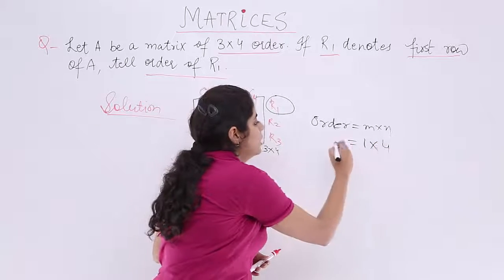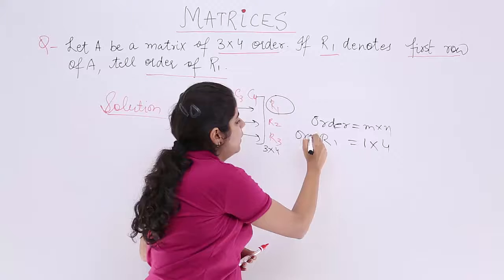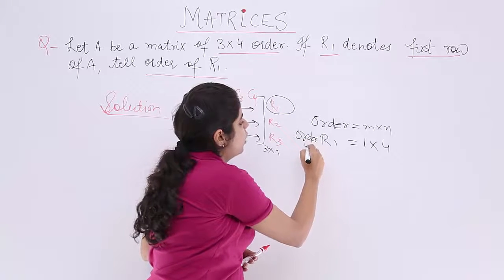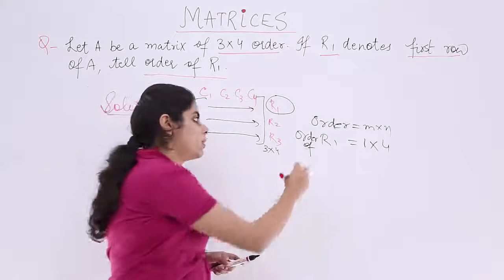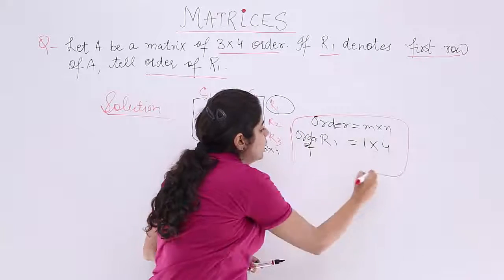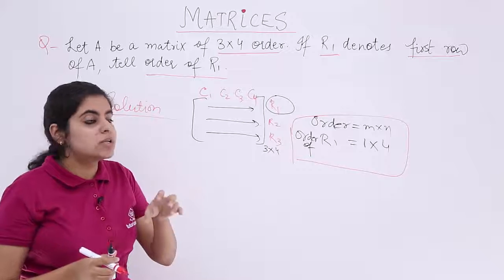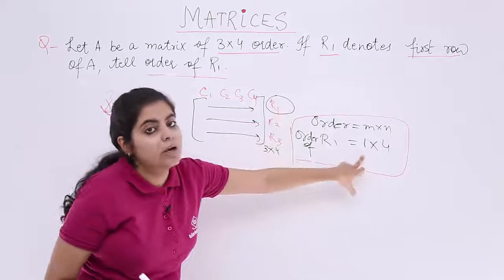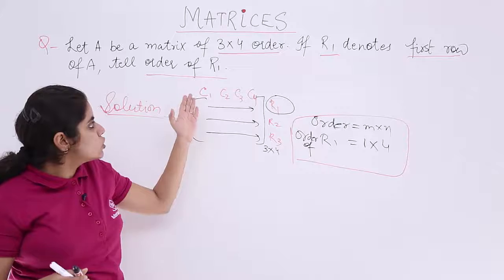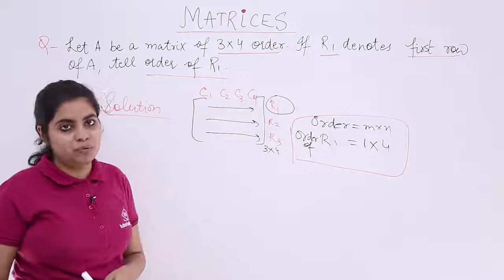So, yes. The order of R1. Order of R1 is what? 1 by 4. How? Again, I am going to tell you order of R1 means number of rows this time is already restricted to 1. But the number of columns does not change, no? So, number of columns are 4. It would remain 4 only.